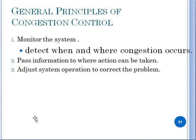The first topic is General Principles of Congestion Control. We need to monitor the system to detect when and where congestion can be generated. We then need to pass information about where action should be taken — for example, if we know congestion is at router 2, we need to send appropriate actions and adjust the system operation to correct the problem, such as diverting packets to another router.